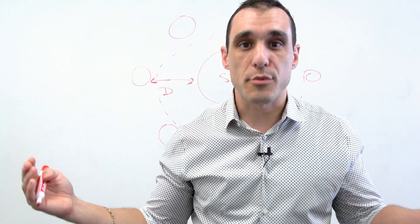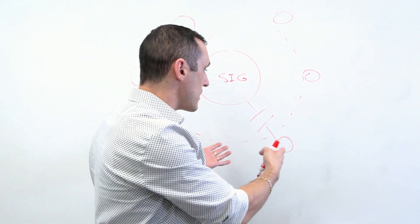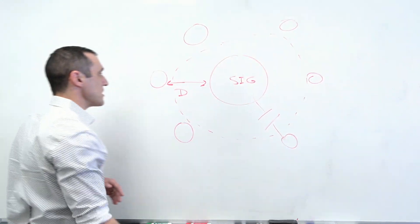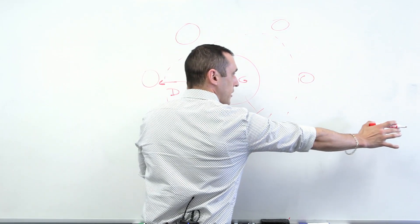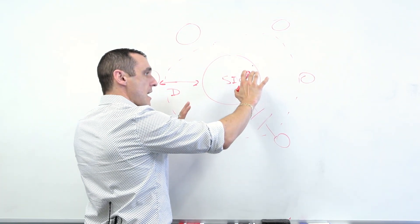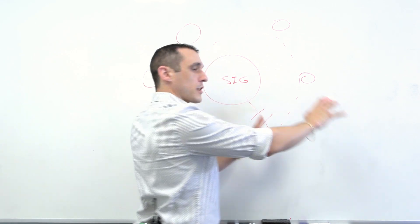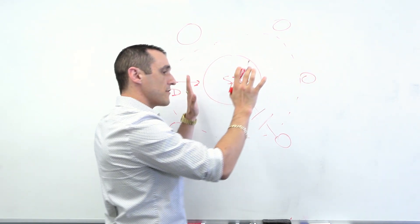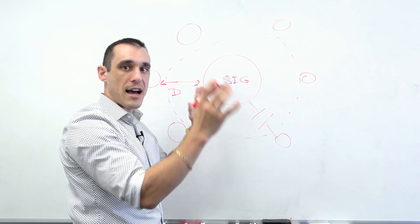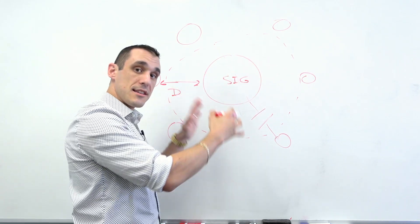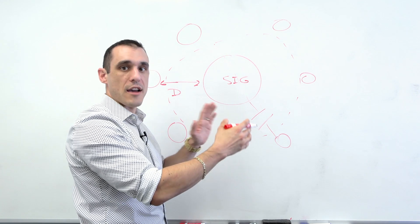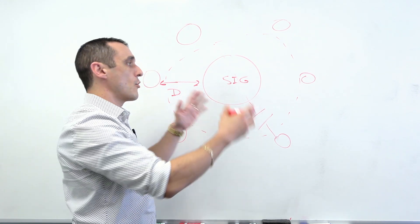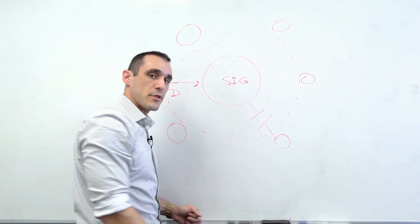So where does the return current flow if there are no vias? It essentially flows through whatever the nearest conductor is. There could be some conductor far away from the signal via, and somewhere else in the board you're going to have a return current. If that return current loop is very large, it's going to have high inductance, it can very easily receive EMI from some external source, and it can generate a lot of noise when there is a signal propagating through this transition.